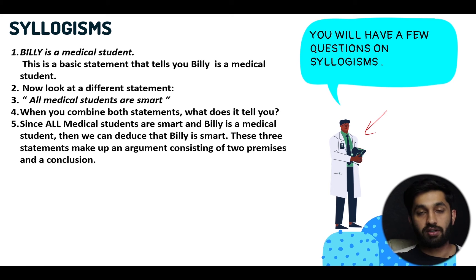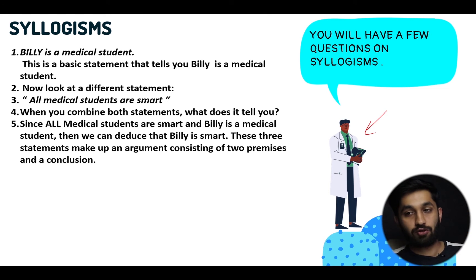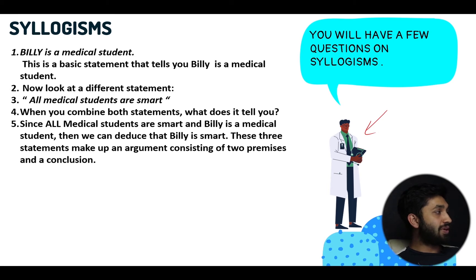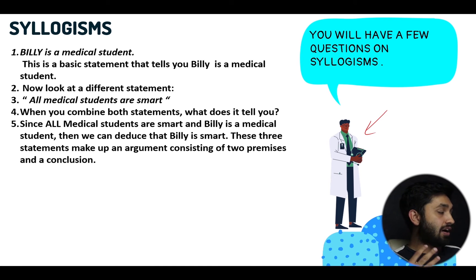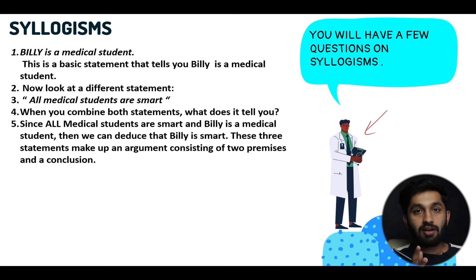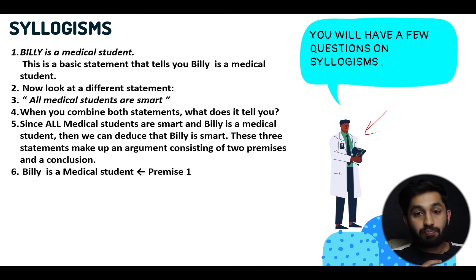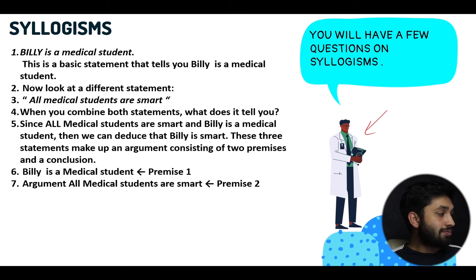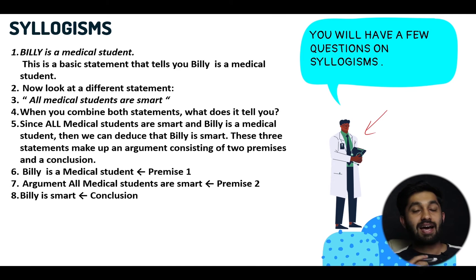What on earth is a premise? A premise is a statement that can justify a conclusion, and it is an assumption that something is true. For a conclusion to hold, you must believe that all the premises are true. Premise number one: Billy is a medical student — you must believe that is true. And all medical students are smart — you also have to believe that is true. As a result, you can create this conclusion: Billy is smart. That's premise one, premise two, and then the conclusion.